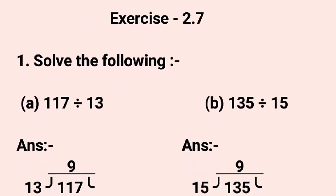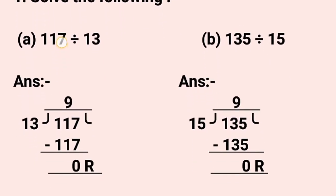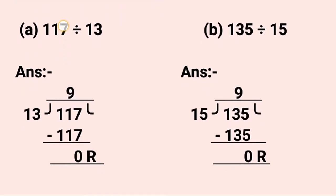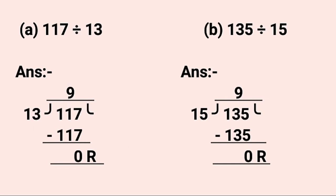These are divisions, A part. Let's start. 117 divided by 13. Here, 3 nines are 117. Now 117 minus 117 gives us 0 remainder. So this is the answer.